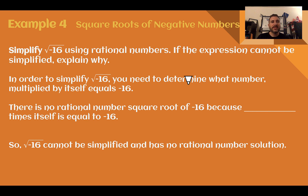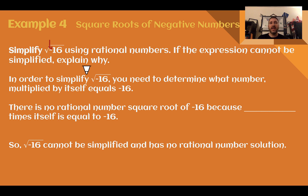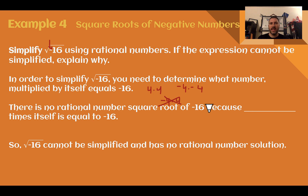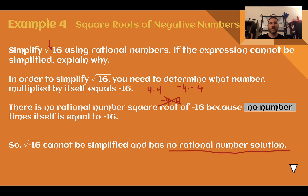Example 4, square roots of negative numbers. Simplify the square root of negative 16 using rational numbers; if the expression cannot be simplified, explain why. The negative is under the square root, meaning we're trying to take the square root of that negative number. In order to simplify, we need a number multiplied by itself that equals negative 16. 4 times 4 is positive 16, and negative 4 times negative 4 is also positive 16. There is no rational number for the square root of negative 16, because no number multiplied by itself equals negative 16. Square root of negative 16 has no rational number solution.